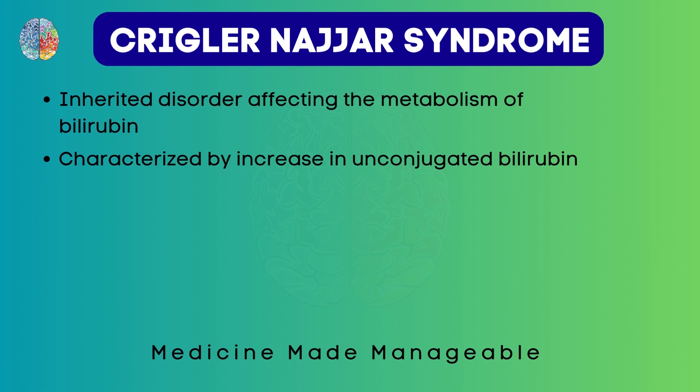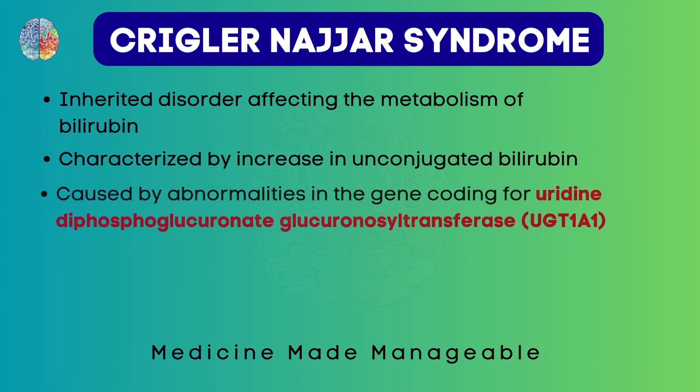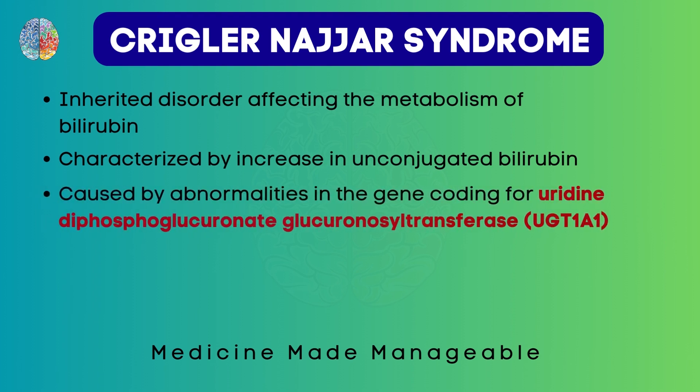This is different from Dubin-Johnson syndrome and Rotor syndrome, where conjugated bilirubin is increased. I've already made videos on both of those topics, so make sure to go and check those out. This condition is caused by abnormalities in the gene coding for uridine diphosphoglucuronate glucuronosyltransferase — the short form you can remember here is UGT1A1.